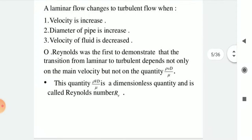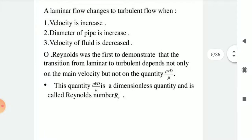Laminar flow changes to turbulent flow when: the velocity is increased; the diameter of the pipe is increased; or the viscosity of the fluid is decreased.